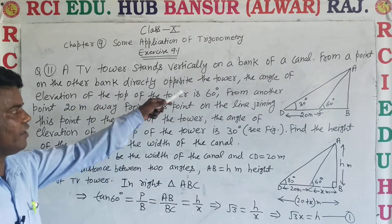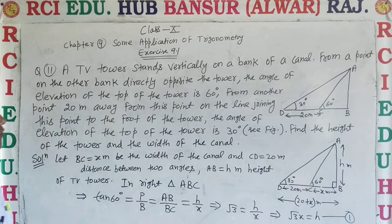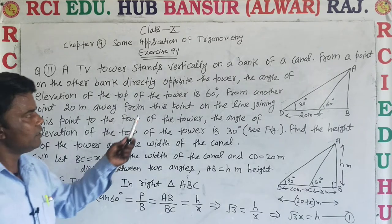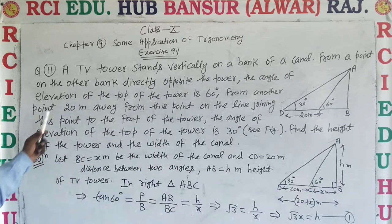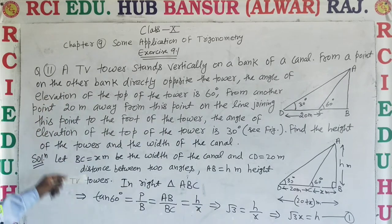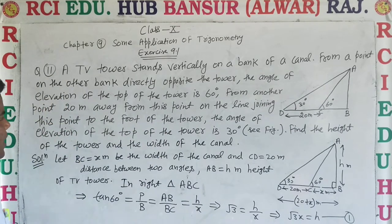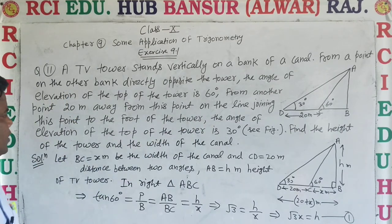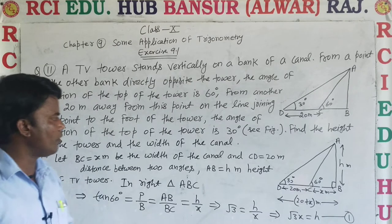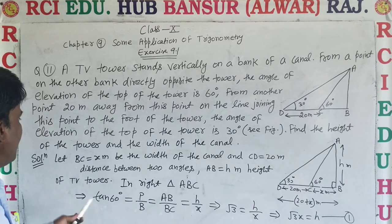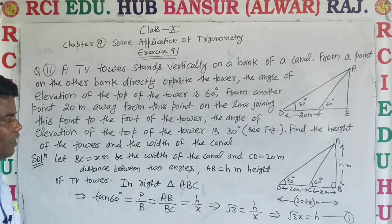A TV tower stands vertically on a bank of a canal. From a point on the other bank directly opposite the tower, the angle of elevation of the top of the tower is 60 degrees. From another point 20 meters away from this point on the line joining this point to the foot of the tower, the angle of elevation of the top of the tower is 30 degrees. Find the height of the tower and the width of the canal.